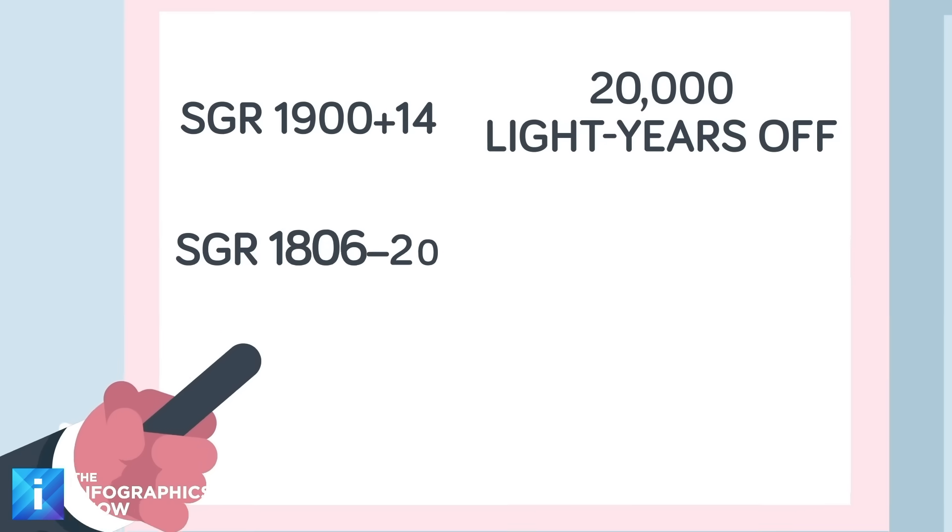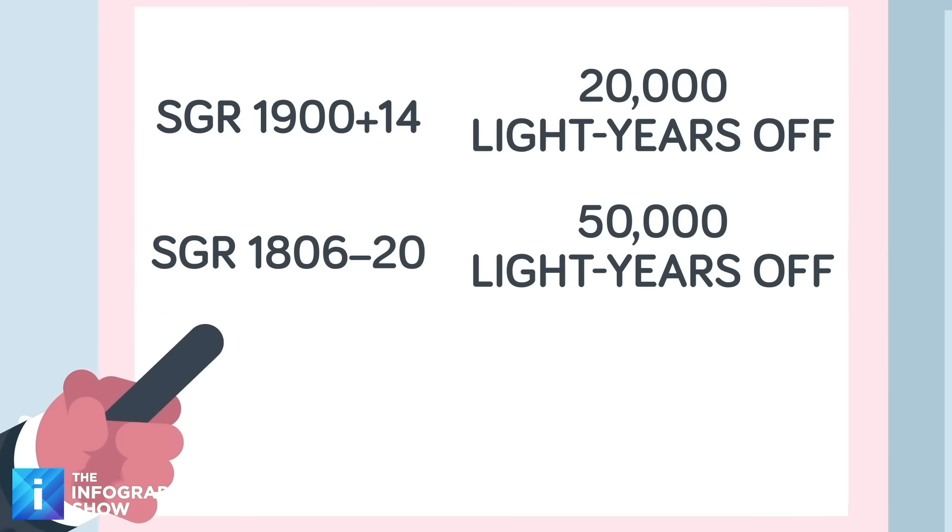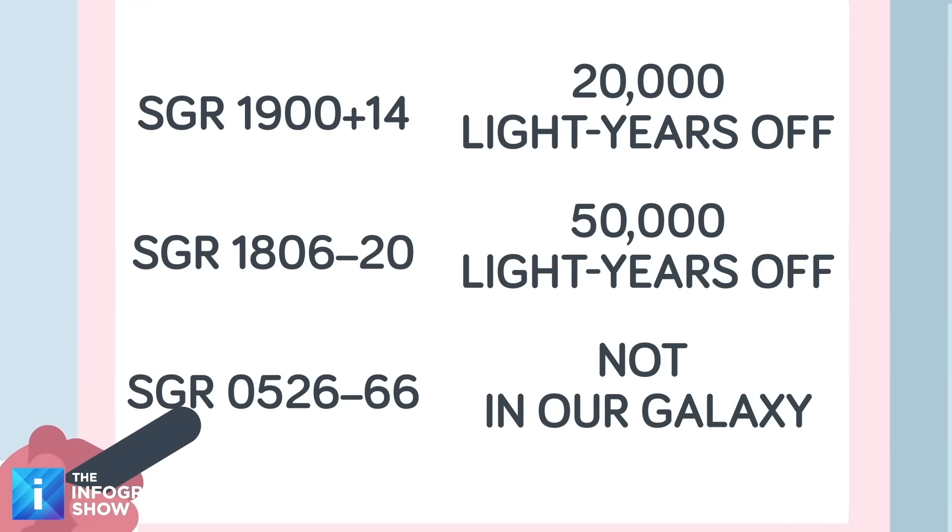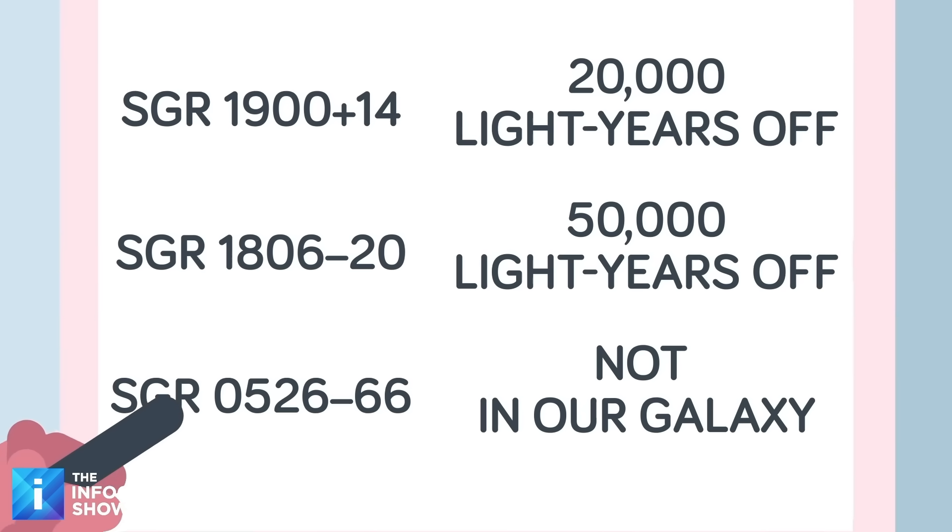SGR 1806 minus 20 is 50,000 light years away. And then, there's SGR 0526 minus 66, the only confirmed one not in our galaxy.